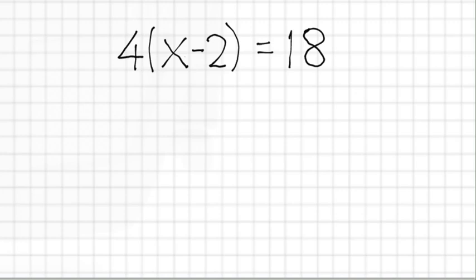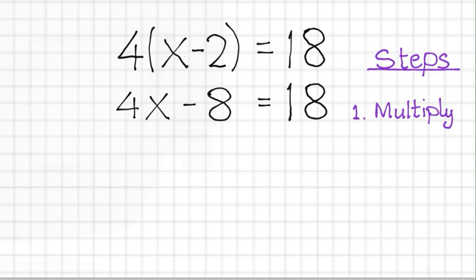Firstly, we need to multiply the brackets. 4 by x is 4x, and 4 by minus 2 is minus 8.